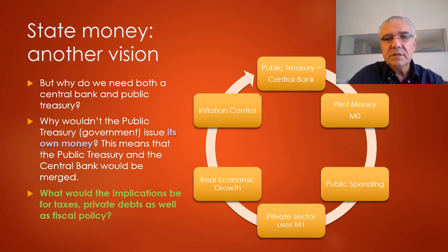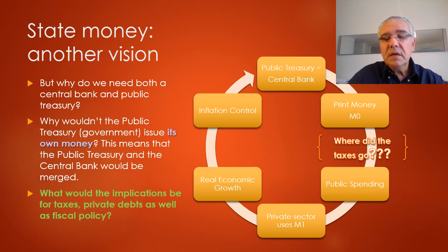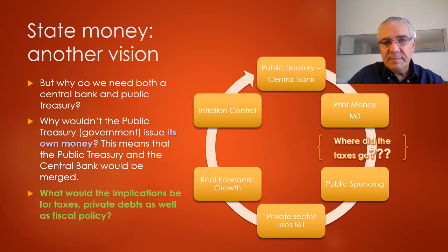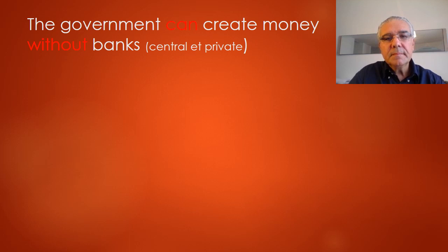So what would be the implications of this particular scheme for taxes, private debts, as well as fiscal policy? Well, the question is: in this scheme, where did taxes go? They seem to have completely disappeared from the picture, which is really interesting, because it looks like in this case the state could just print enough money to pay for its expenses without having to tax the people. Another implication is that the government can actually create money without banks, and we have historical examples of that.